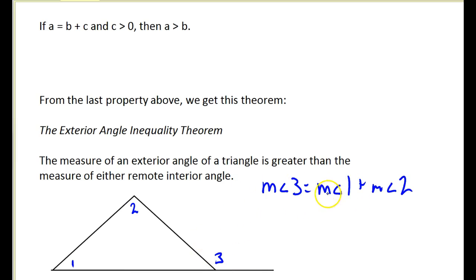Now, since I have to add one and two together to equal three, that means that the measure of angle three has to be bigger than either of those angles. And that's what this exterior angle inequality theorem is telling us.